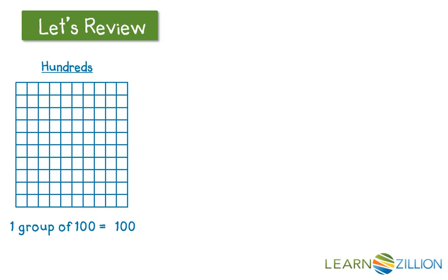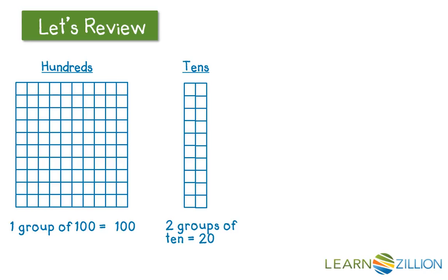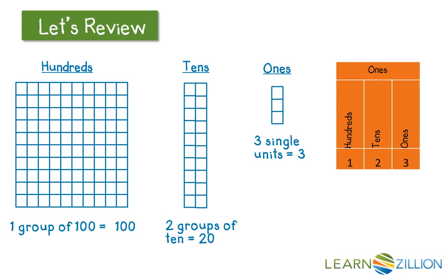Let's do some review. In the past, you may have used base 10 blocks to represent whole numbers. For example, one group of 100 would equal 100. Each group of 10 would equal 10, so here we see two groups of 10 equaling 20. And each individual single unit equals 1, so here we see 3 units. So this would represent the number 123.